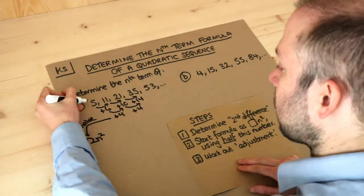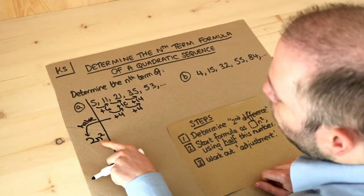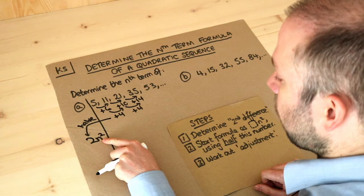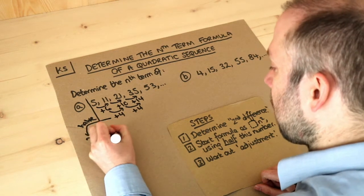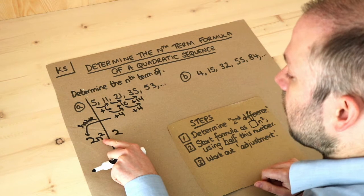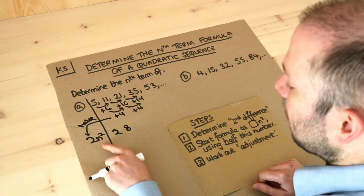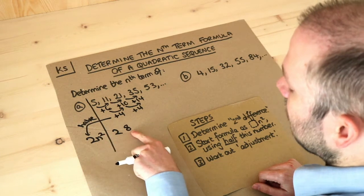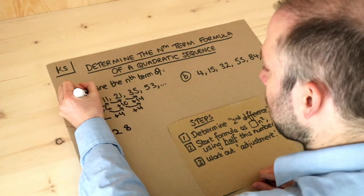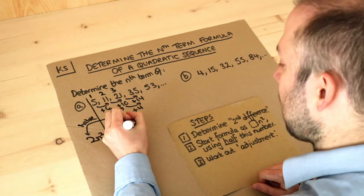I'll draw a line and put our sequence here. If our formula was 2n², the first term would be 2×1² = 2, the second term would be 2×2² = 8, and the third term would be 2×3² = 18. Note: 2n² means two lots of n squared — not (2n)², which would give 16 instead of 8.